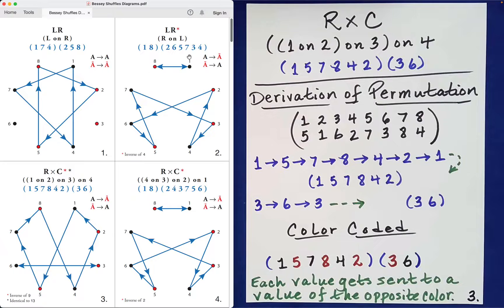Well from the diagram it would seem to be reasonable because look, eight and one get sent back and forth between each other. So if we do that twice, yes it goes back to where it was. And then notice we get the same looking diagram but the arrows are reversed.